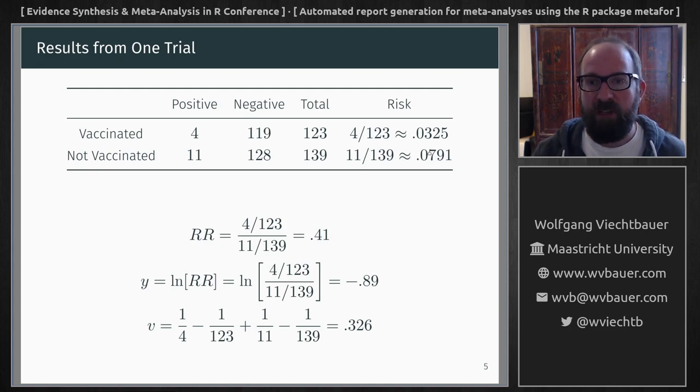We have the infection risk in the two groups, the risk ratio which indicates that the risk of infection was quite a bit lower in the vaccinated group, the log risk ratio which we really need for the meta-analysis and the corresponding sampling variance.